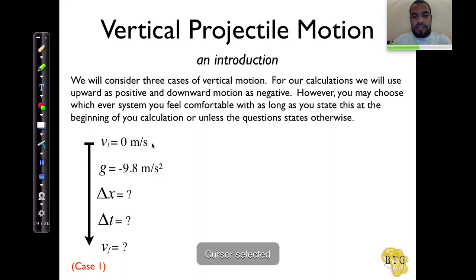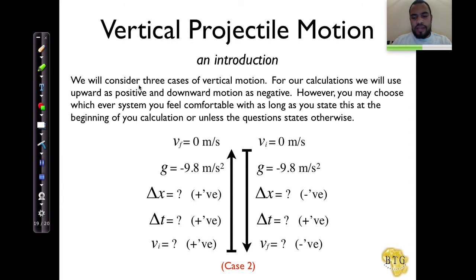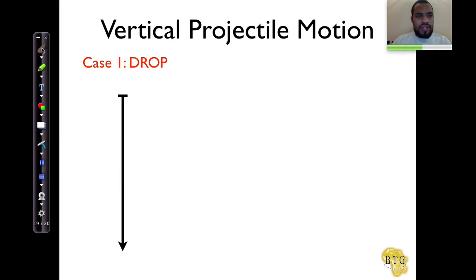So the drop case. What do we know about the drop case? Firstly, I want to point out this word, as you can see over there. The word drop tells us one very important thing. Right from seeing the word drop, we know that the initial velocity is equal to zero meters per second.